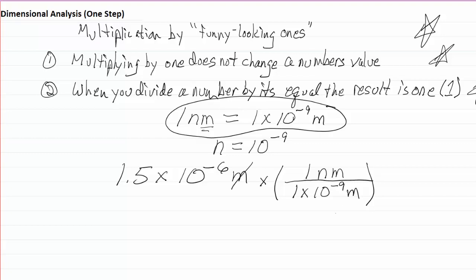Okay, the meters will divide out. I'll end up with, on the top I'll have 1.5 times ten to the minus sixth nanometers, divided by, on the bottom I'll have one times ten to the minus ninth. And the meters are gone, so I don't have those anymore.